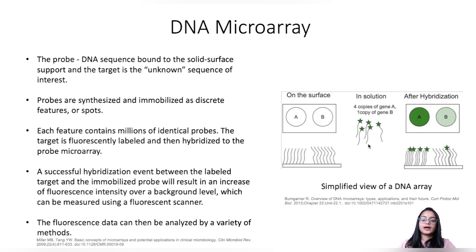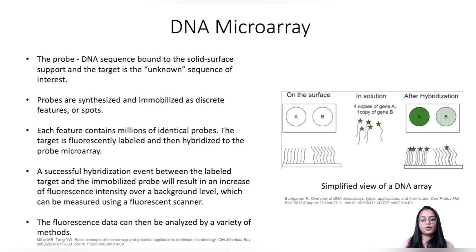In a gene expression experiment, the target sequences are the mRNA or transcript sequences from all the genes. The transcript sequences from each gene bind to the complementary strands of the probes, and in the next step any unbound sequences are washed off. We then get a readout of signal intensities — a higher number of transcript copies from gene A bound to the complementary probes generates a higher signal intensity, indicating that gene A has higher expression compared to gene B.